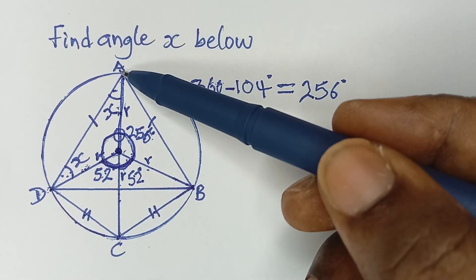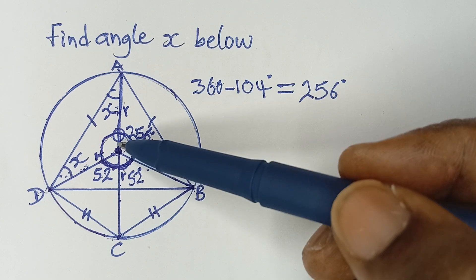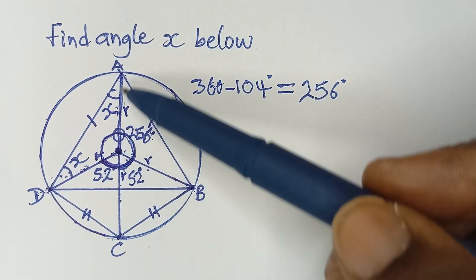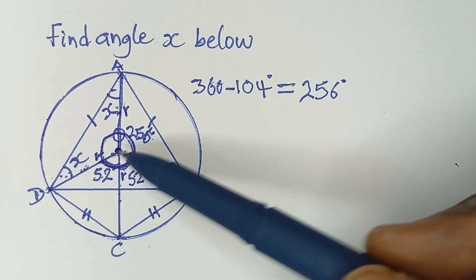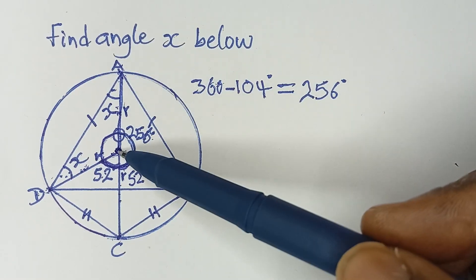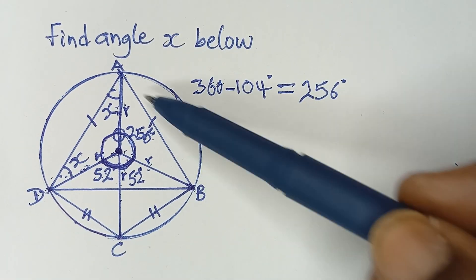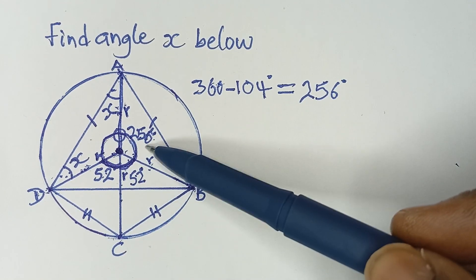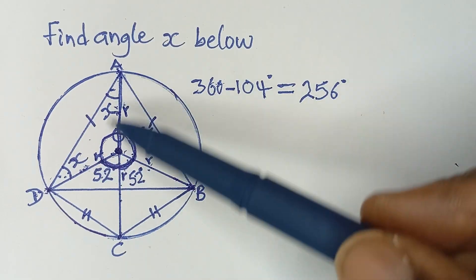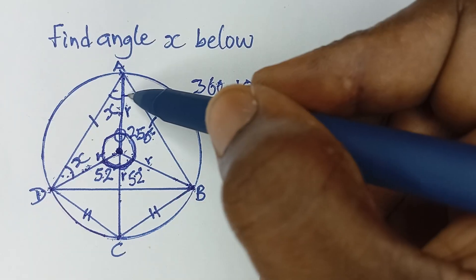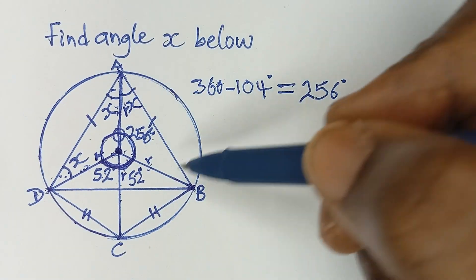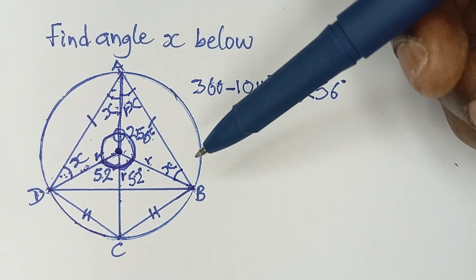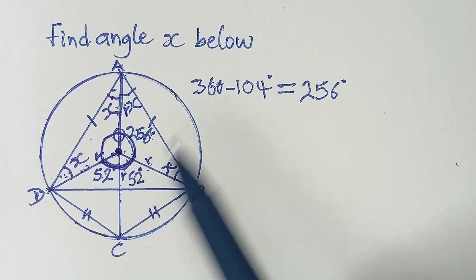Now compare triangle DOA with triangle AOB. This is a radius, this is a radius, and side AD equals AB. So triangles DOA and AOB are exactly congruent — all their corresponding sides are equal. Since they are exactly equal, all their corresponding angles are also equal. So the angles in triangle AOB are also x and x, giving us x, x, and x across both triangles.